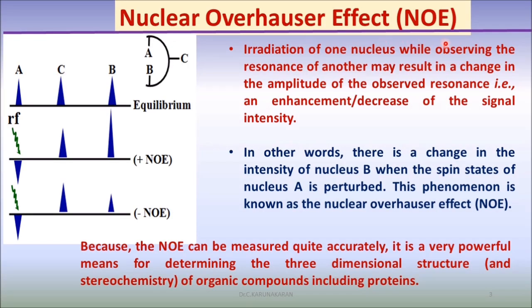What is nuclear Overhauser effect? What is NOE? For example, this is a protein molecule or organic molecule where there are three protons A, B, and C. There are three different protons that give three different chemical shifts. A and B are spatially closer together, whereas C is not closer together.